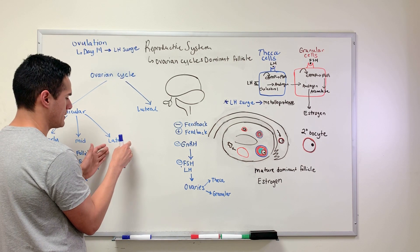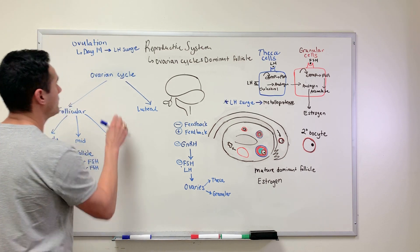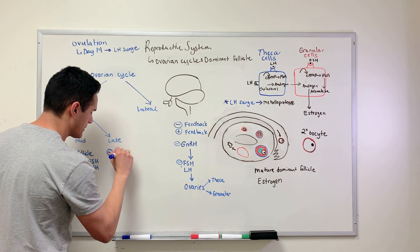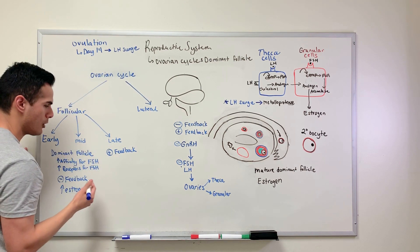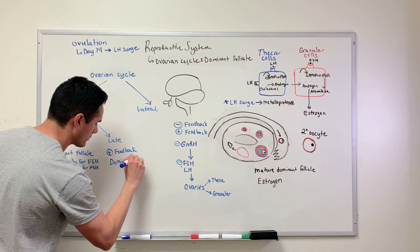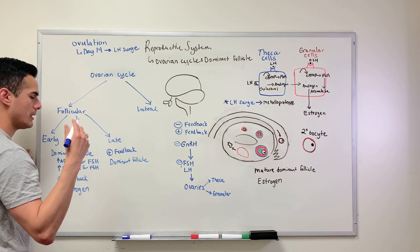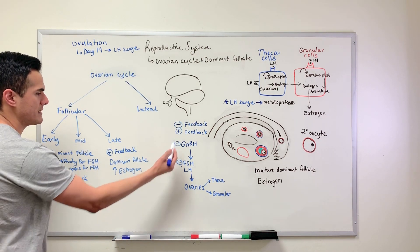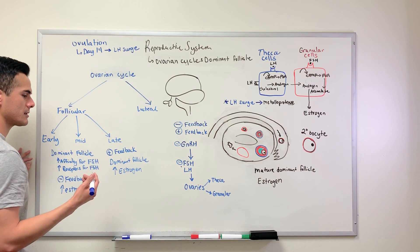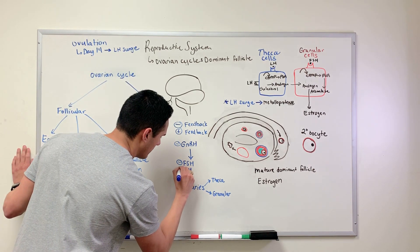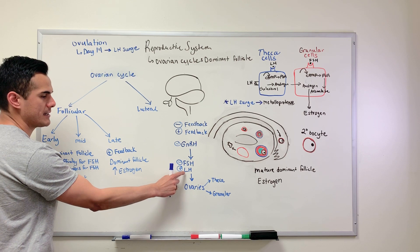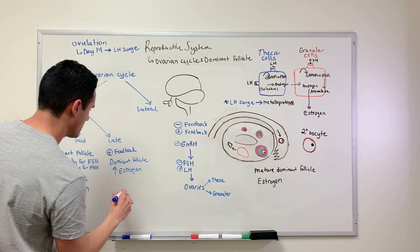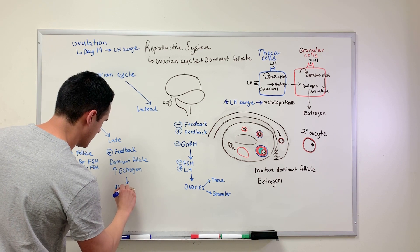In the late follicular phase, right before ovulation — which happens around day 14 — in order for the LH surge to happen, we need a positive feedback mechanism. The dominant follicle is going to be secreting increasing levels of estrogen, and once the hypothalamus and pituitary detect these increasing levels, that results in our positive feedback and we get our LH surge. The LH surge activates the metalloproteases and ovulation happens.